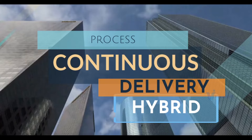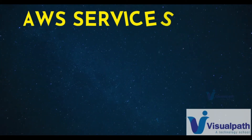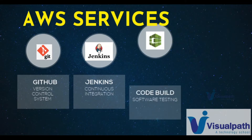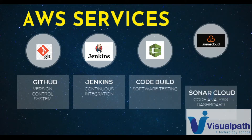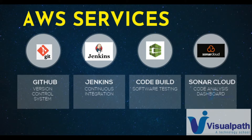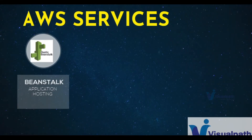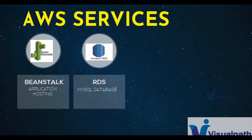Let's see the services we are going to use in this project. We are going to use Git for version control, GitHub, Jenkins for continuous integration, and AWS CodeBuild for running software testing. We'll use SonarCloud for the code analysis dashboard — so you don't need a SonarQube server running; we are going to push all our code analysis results to SonarCloud and also set quality gates there. Our application will be hosted on Beanstalk, and we are going to use RDS for the database. Optionally, you can also include ActiveMQ and Elastic Cache.